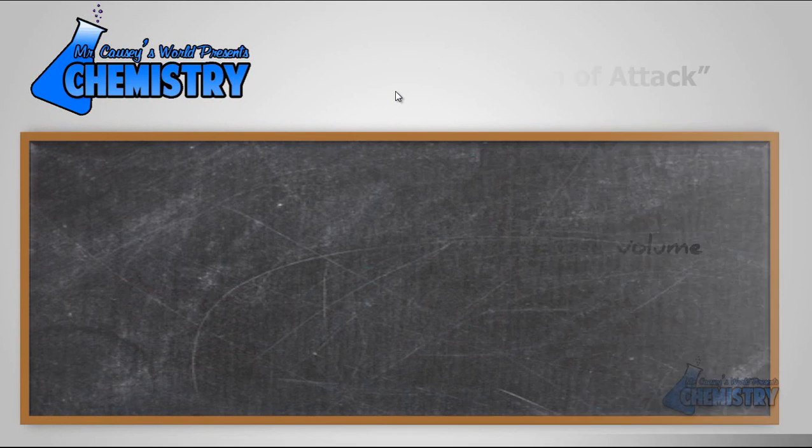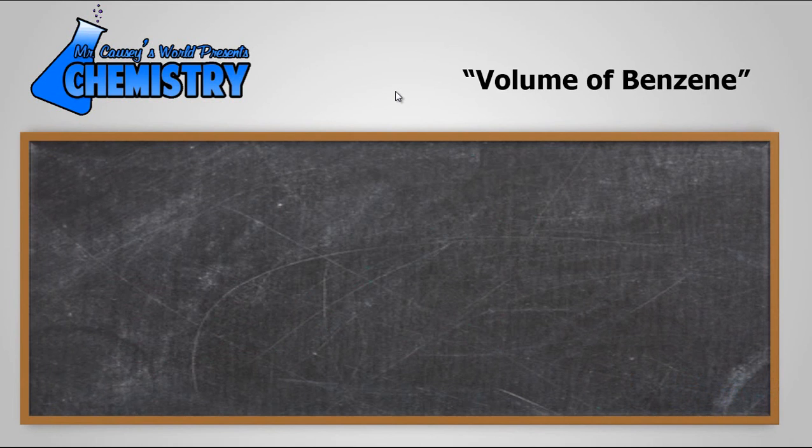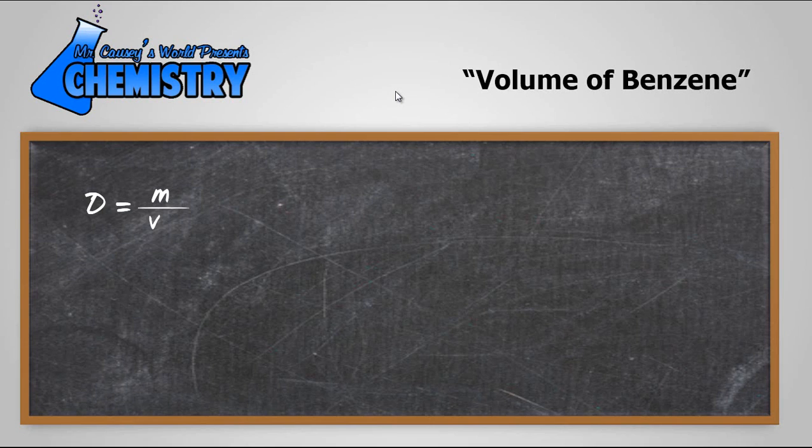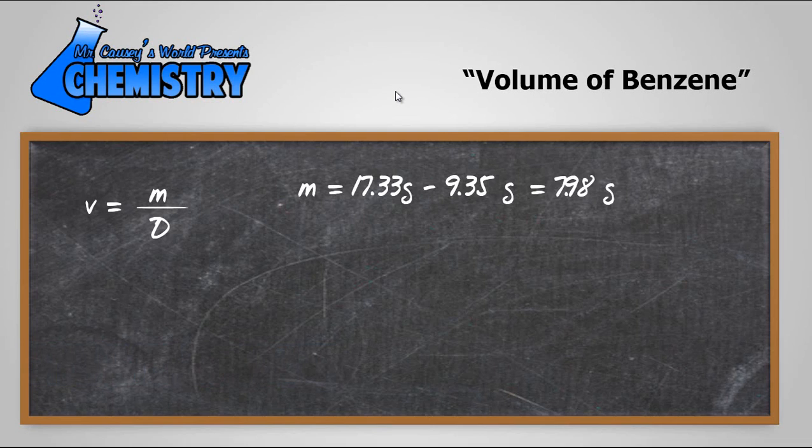All right let's go to the magic blackboard. For the volume of benzene first I'm going to take our little formula d equals m over v and I need to algebraically rearrange it. And so using our algebra tools I'll get v equals m over d and I know that the mass is going to be 17.33 grams minus 9.35 grams and that'll give me 7.98 grams of benzene.